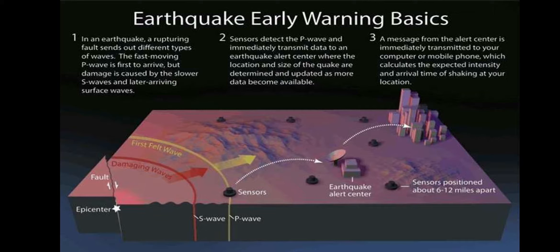A seismometer is used as a seismic identifier in the early warning system. The messages from the alert center are immediately transmitted to TV channels, mobile phones, SMS, and local police or village administrative personnel who alert people in their streets.